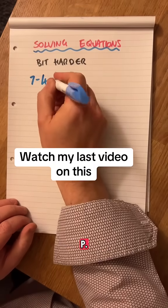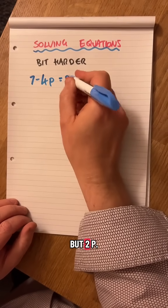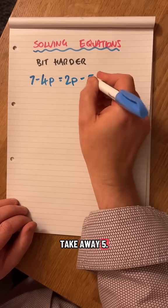7 take away 4p, not 4p, but 2p, that equals 2p take away 5.